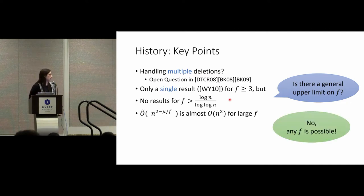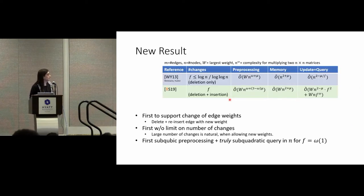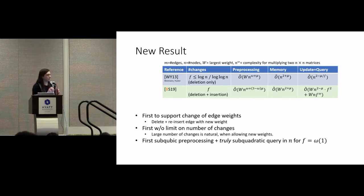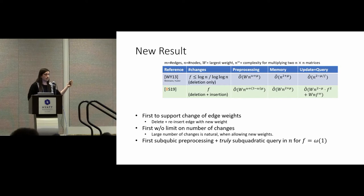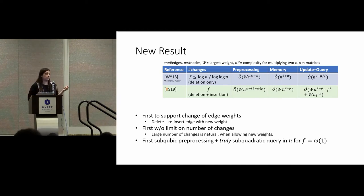This raises the question: maybe there's a general upper limit on f — could it be that this problem is impossible for large f? We can now answer no. Any number of deletions is possible. Let's compare our result to the previous best. We managed to improve in pretty much every category. The number of deletions or edge changes no longer has any upper limit. Also, for the first time we can handle insertions, which allows for increasing an edge weight by deleting and reinserting it with a larger weight.